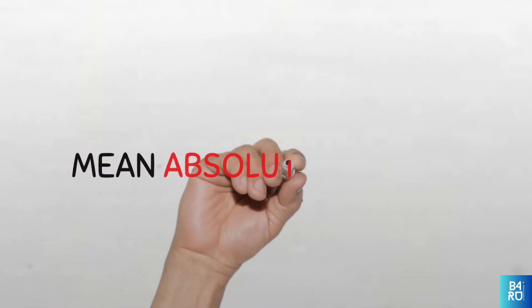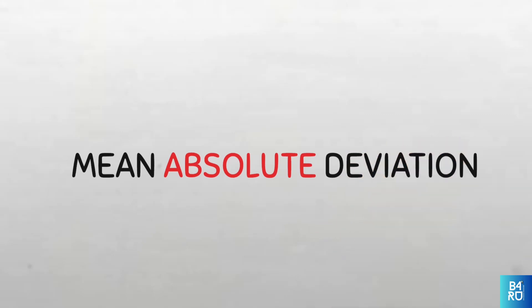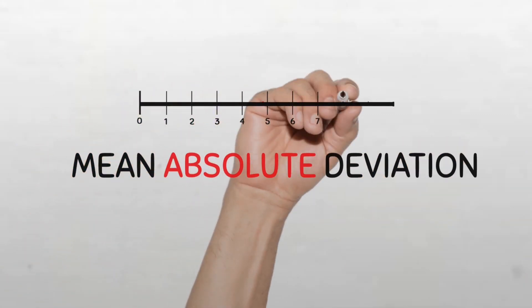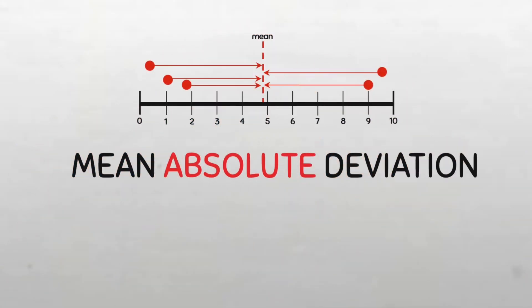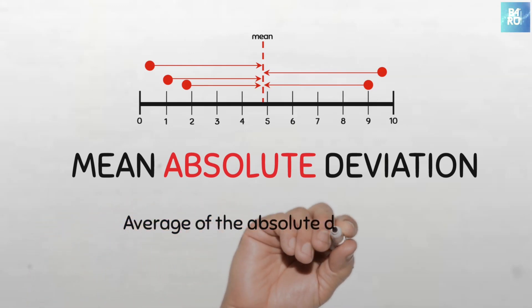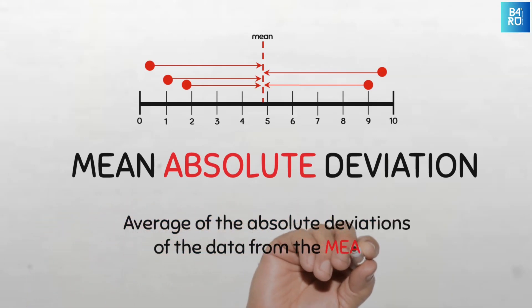The mean absolute deviation is a measure of dispersion that indicates the average spread of data points in a distribution from the mean. It is defined as the average of the absolute deviations of data from the mean.